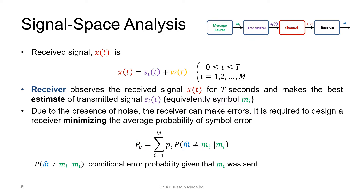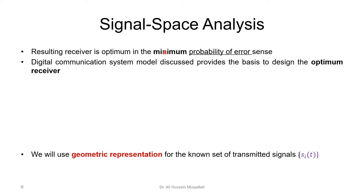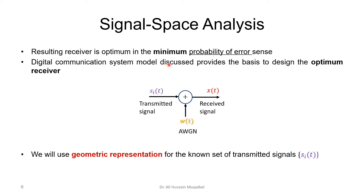To continue with signal space analysis, we'd like to design a receiver that is optimum in the minimum probability of error sense. The digital communication system is based on the following model: the transmitted signal, additive white Gaussian noise added to it, producing the output signal. To make this receiver optimum, we need the geometric representation — instead of dealing with waveforms, we will deal with the geometric representation and base our optimum receiver design on it.